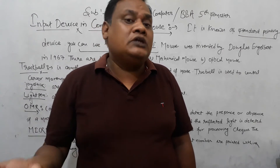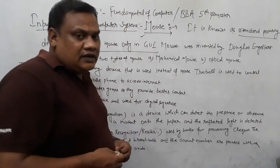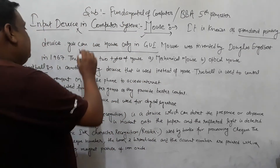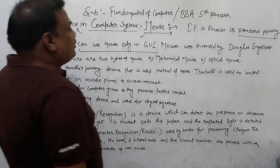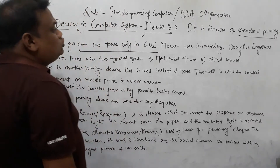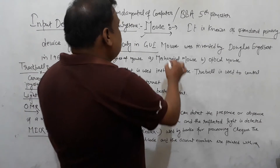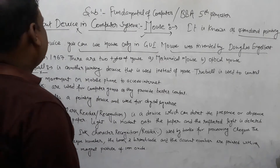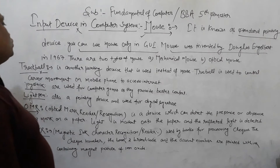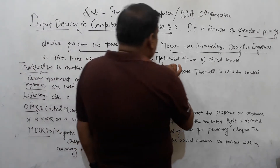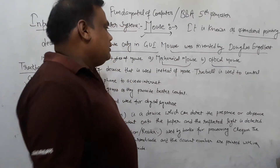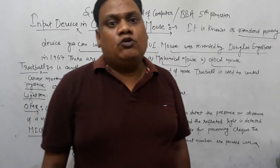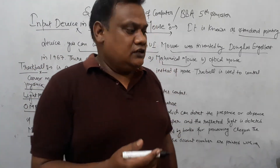In a CUI — Character User Interface, such as Linux — you use commands, not a mouse. You can use the mouse only in GUI format. The mouse was invented by Douglas Engelbart. The keyboard was developed by Christopher Latham Sholes in 1867. There are mechanical mice and optical mice; mechanical mice are now obsolete and optical mice are in use.